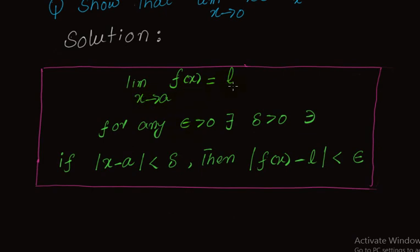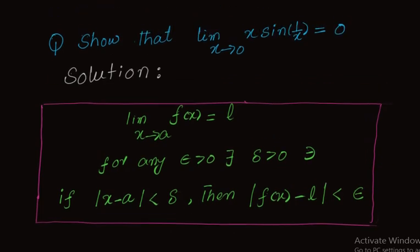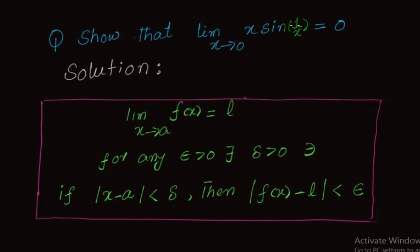The Delta-Epsilon definition states: the limit as x approaches a of f(x) equals L, implies that for any epsilon greater than 0, there exists a delta greater than 0 such that if |x - a| is less than delta, then |f(x) - L| is less than epsilon.